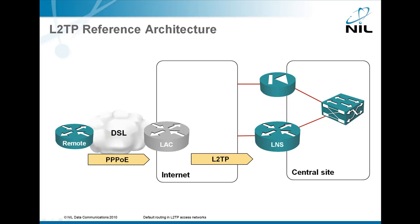The LNS is connected directly to the internet and obviously has an access list on the outside port to prevent packets from the internet from entering the LNS and, through it, the enterprise network.